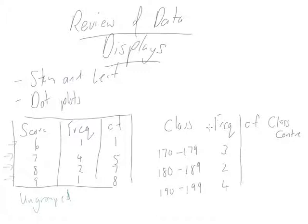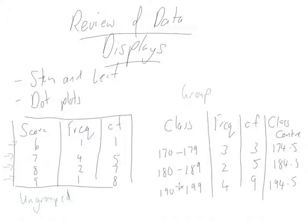Cumulative frequency works the same as before - add the frequency as you go: 3, then 5, then 9. The class centre is the middle of the class, so you average the two endpoints. For 170-179, it's not 175 but 174.5. The next class center is 184.5, and then 194.5. For grouped data, groups and classes are the same thing.